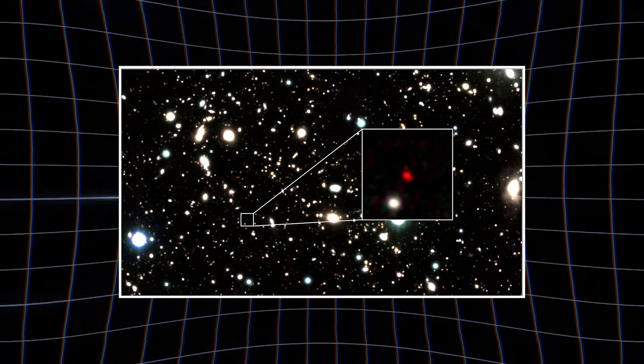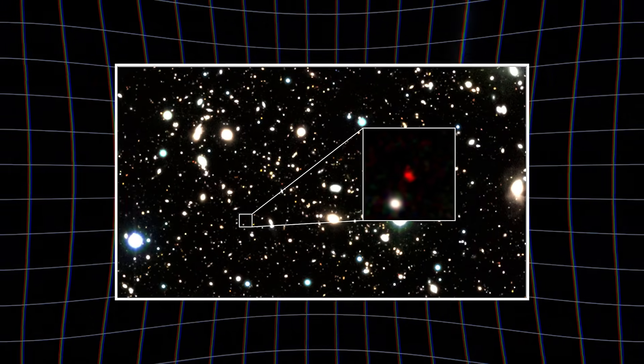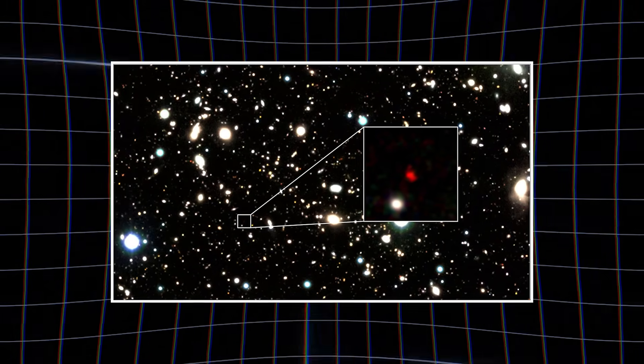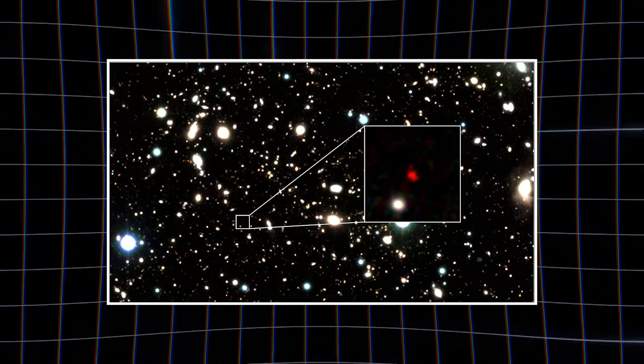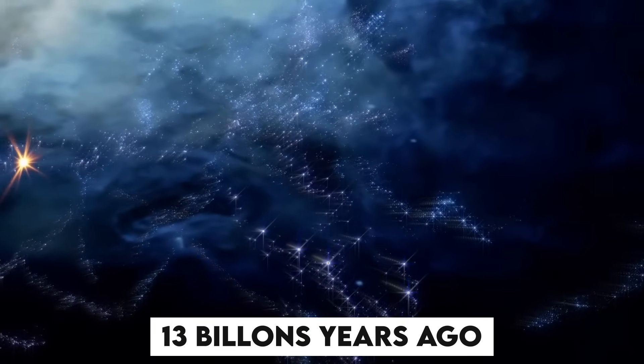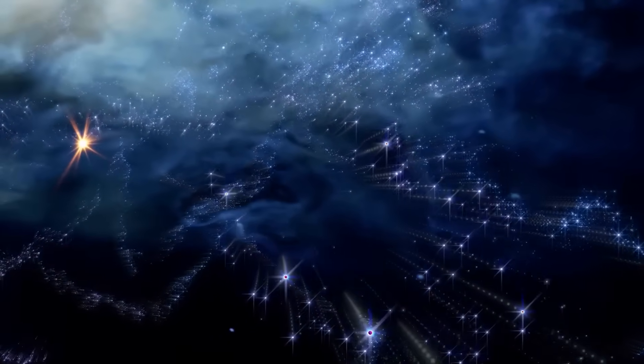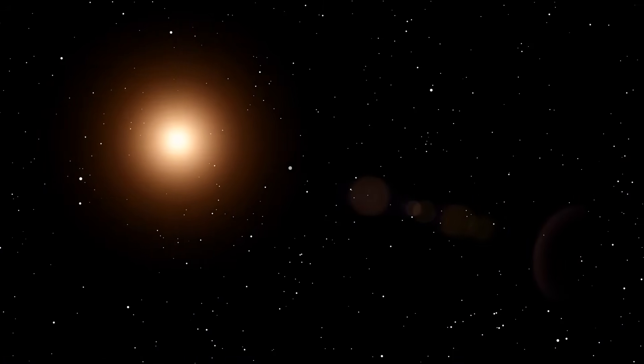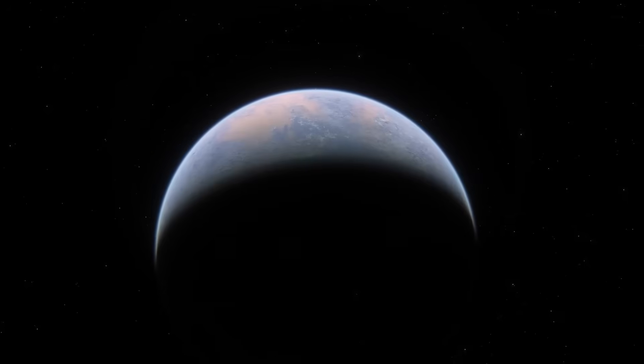When JWST takes a picture of a galaxy 13 billion light-years away, it's not seeing it now, it's seeing it as it was 13 billion years ago. That's because light takes time to travel, so every deep space image is essentially a snapshot from the past.